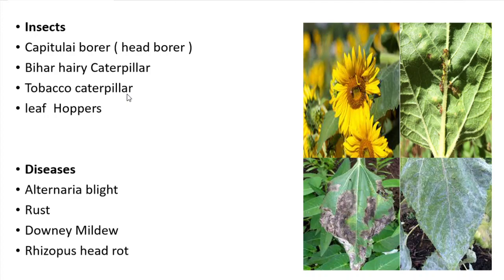Bihar hairy caterpillar and tobacco caterpillar feeding leads to defoliation and destroys the entire field, drastically reducing the yield. Leafhoppers suck the sap from the plant and leaves, leading to discoloration and a reduction in yield.